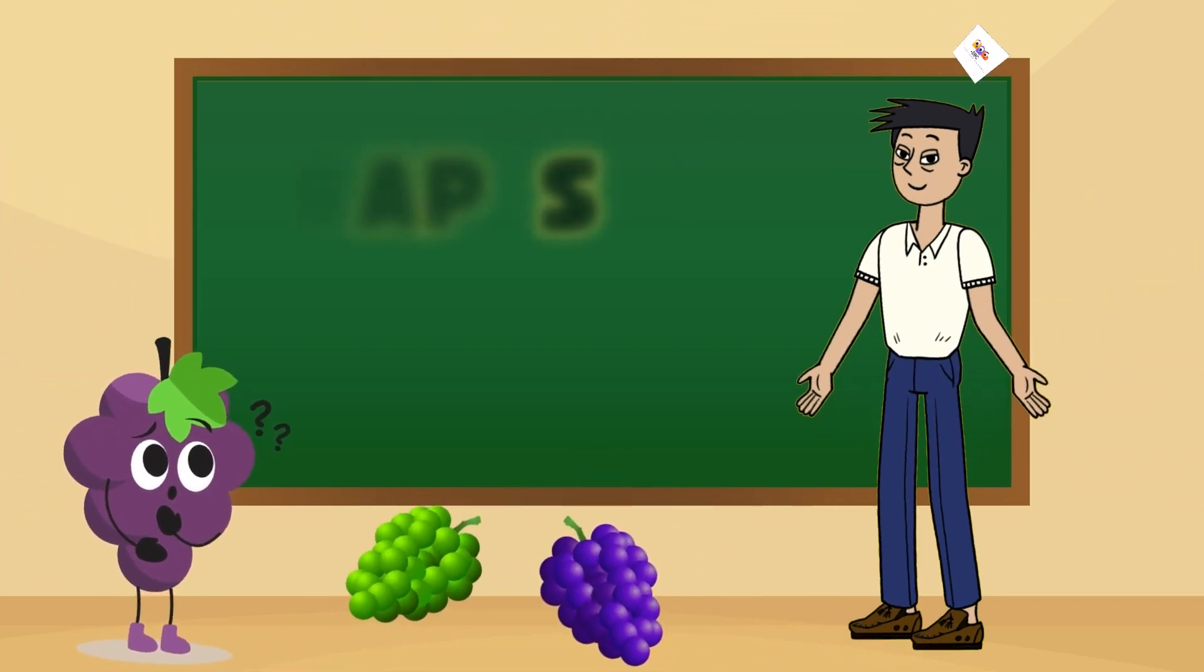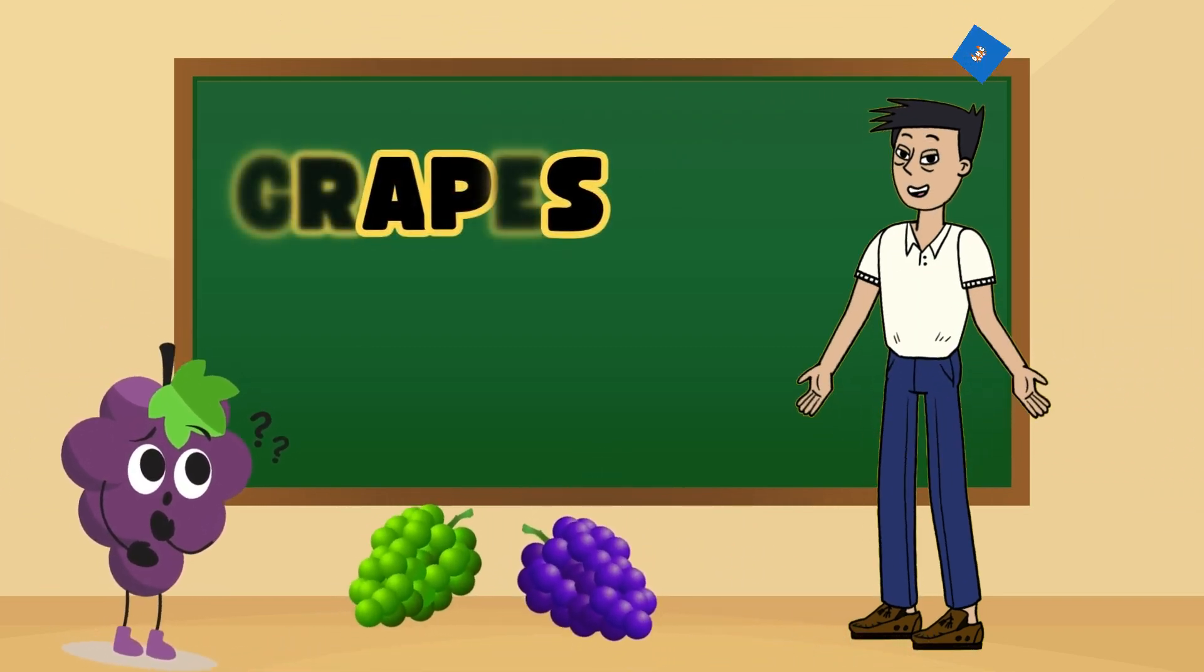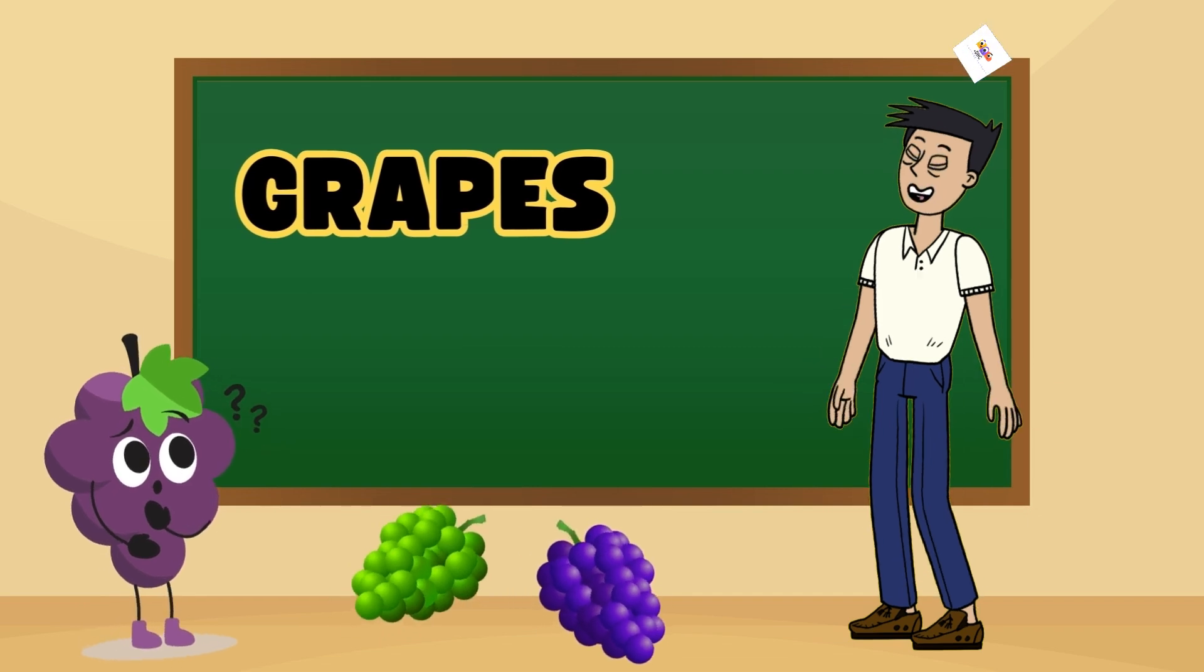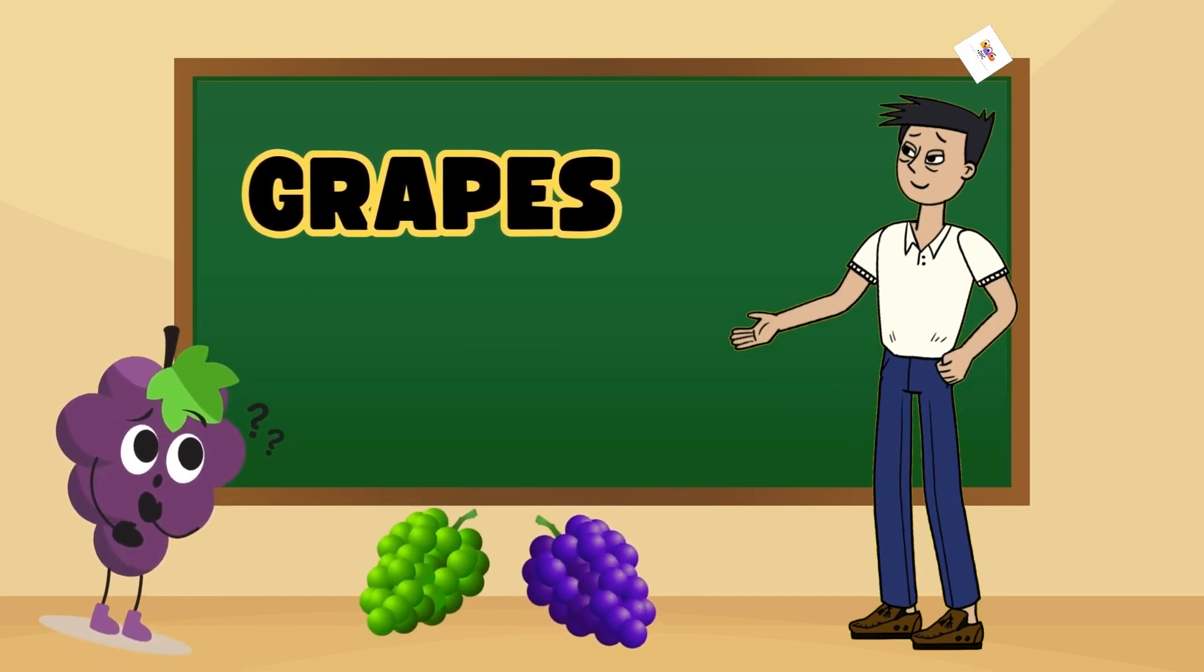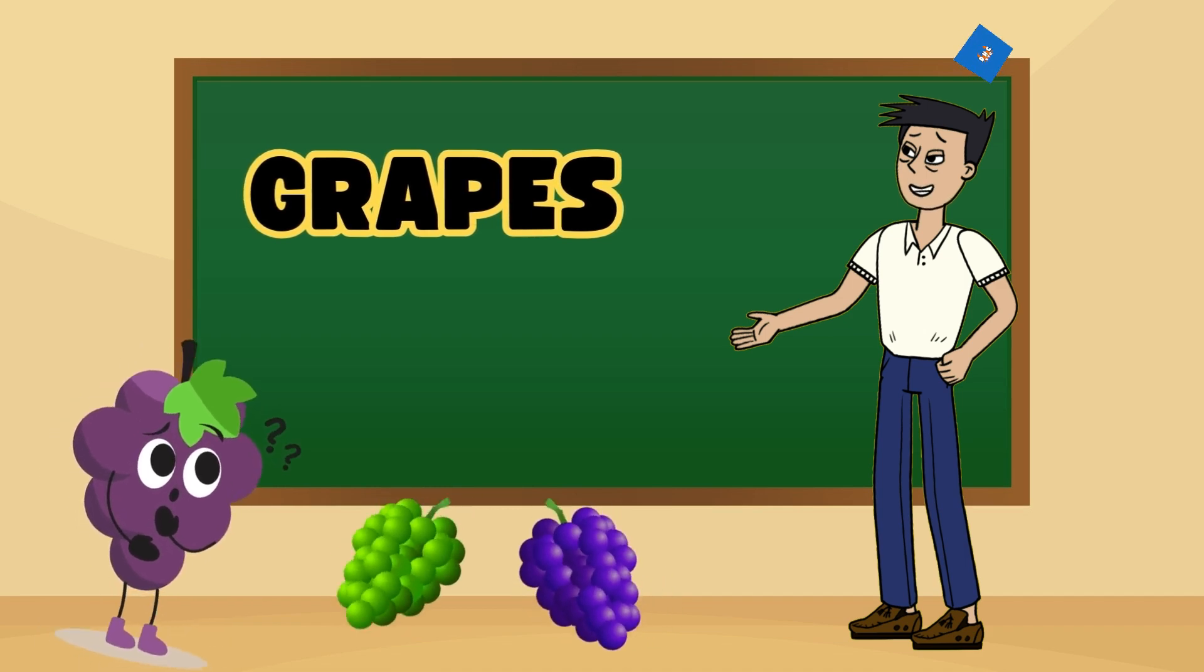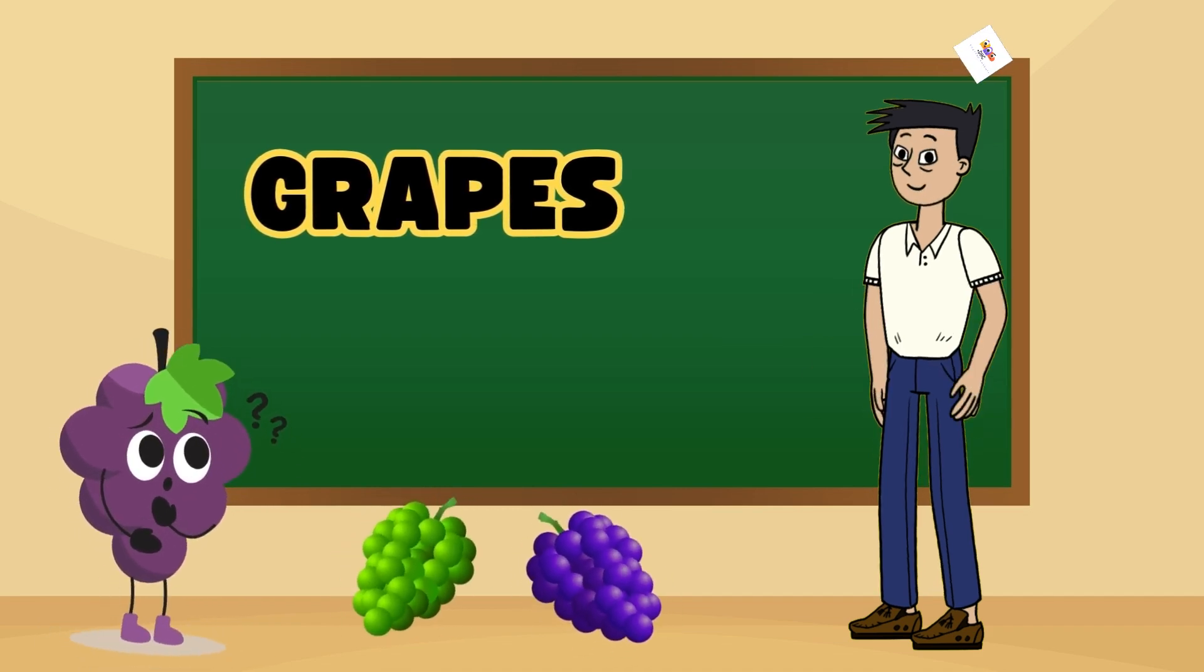Two is grapes. Grapes came in many colors, green, red and purple. They grow in bunches and are great for snacking. Did you know they can be turned into raisins?